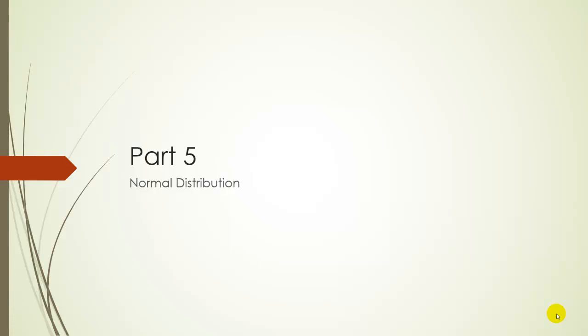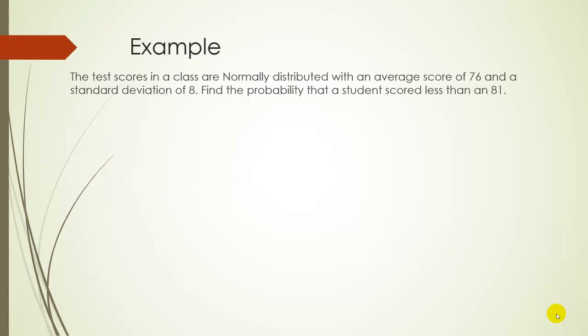For part 5, we'll explore the normal distribution, or more specifically, how can we find the probability that x is less than a number or more than a number if we know x follows a normal distribution? Let's explore this example. Suppose test scores in a class are normally distributed, so they follow a bell curve, with an average of 76 and a standard deviation of 8. Find the probability that a student scored less than an 81.